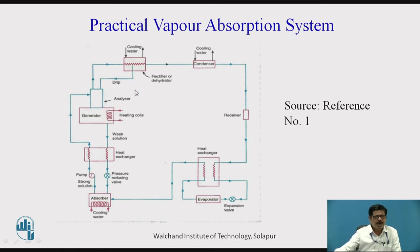Now after passing through the analyzer, they are entering into the rectifier, or dehydrator. This is again a small heat exchanger. So even if 98% of the water vapors are separated in the analyzer, there are chances that 1 to 2% of water vapors may remain in the ammonia vapors. So they are further removed by cooling this ammonia vapors by using a rectifier or dehydrator. So the remaining water vapor, if any present, it will be condensed and it will be sent back to the analyzer through the drip, and then which will be going to the generator.